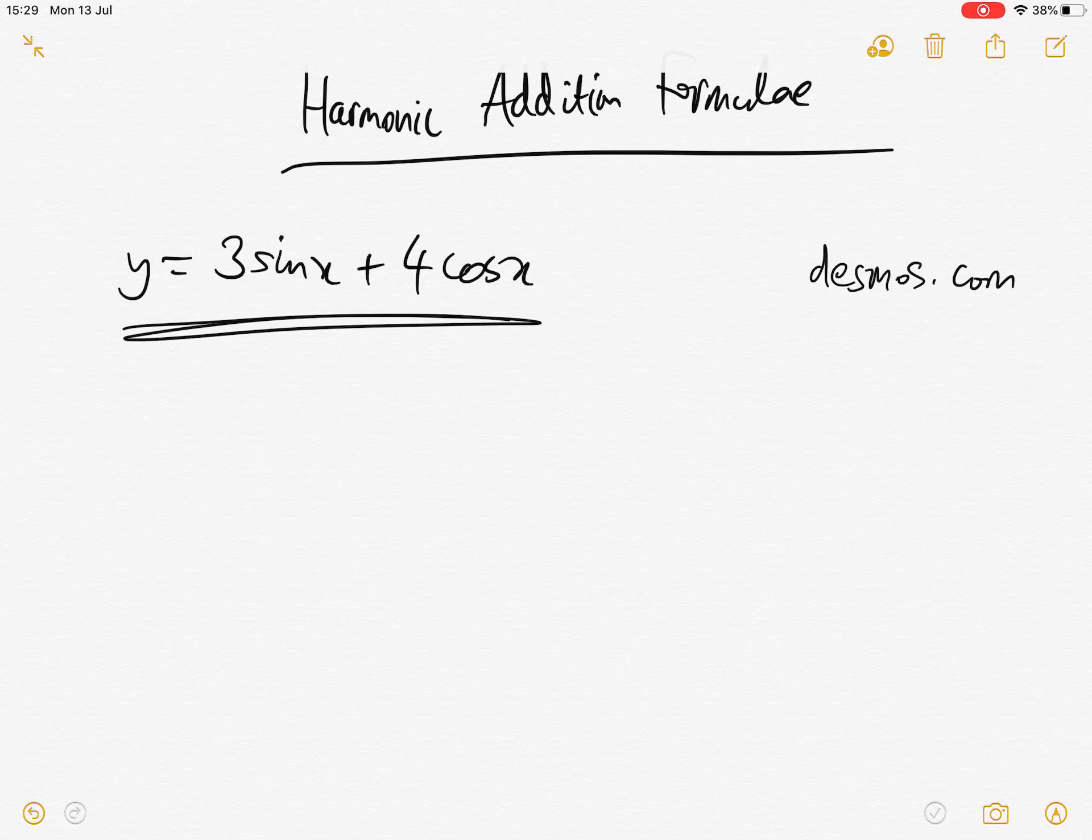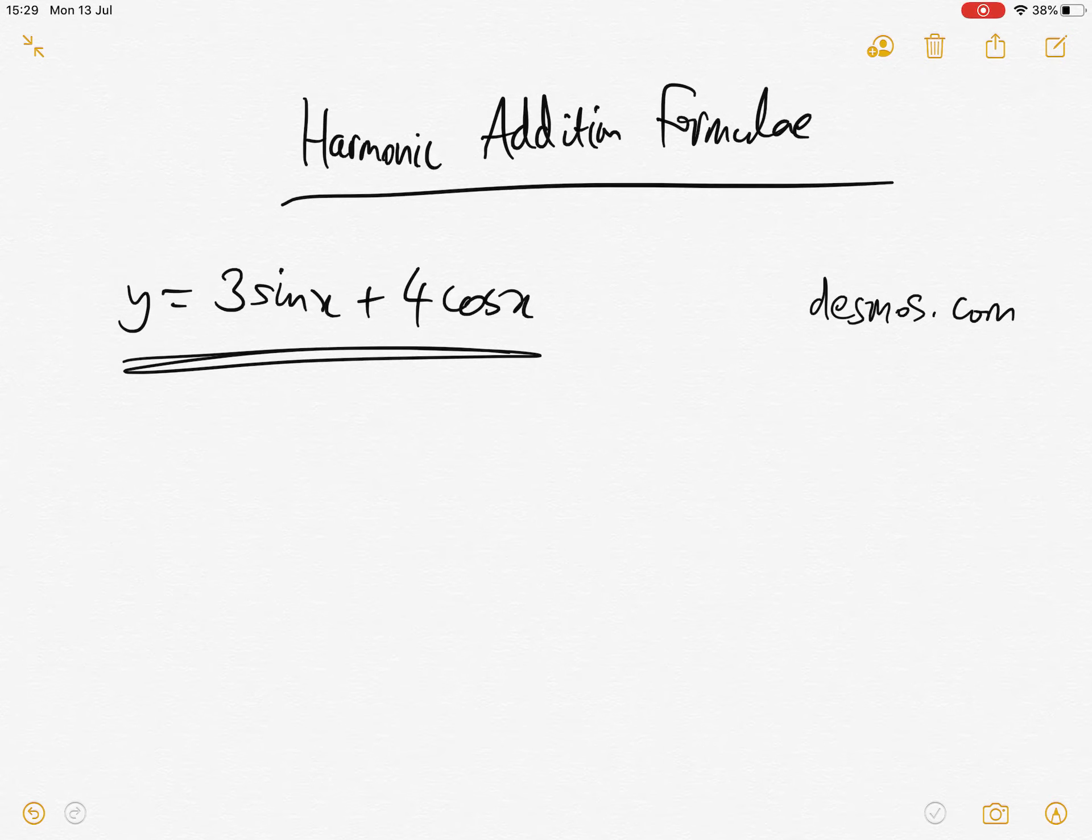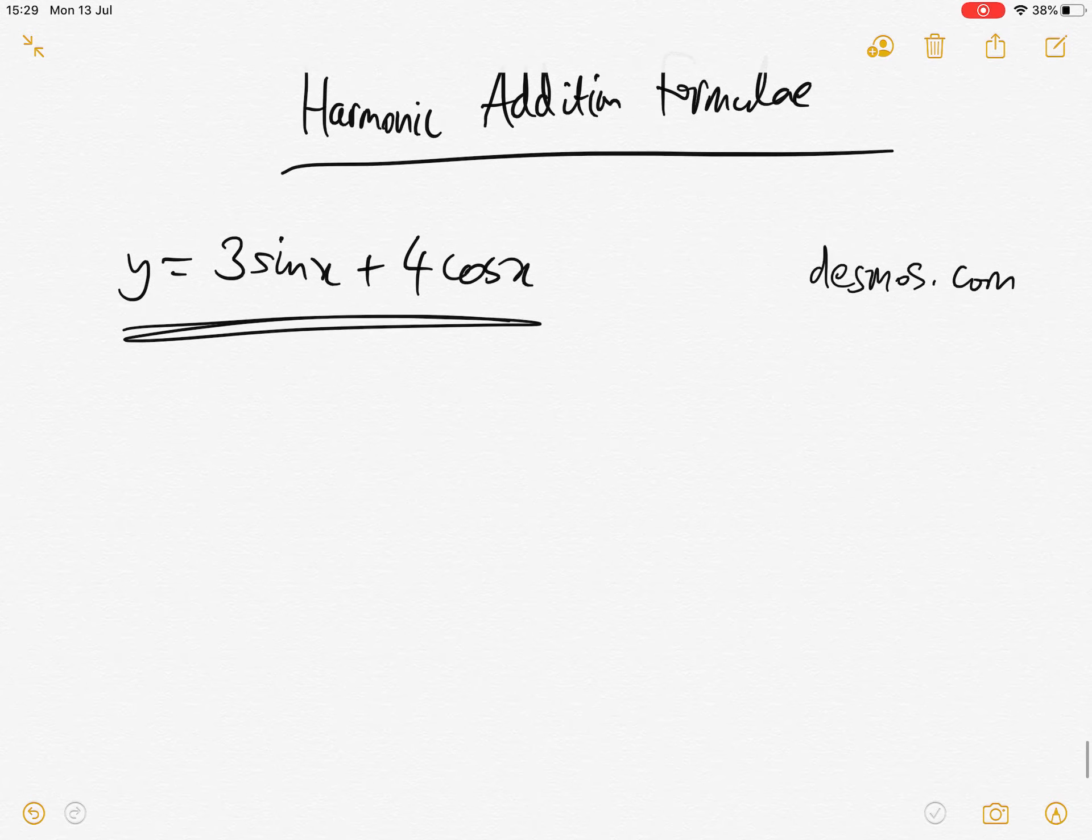Hopefully your answer is that it reminds you of a single trig function. It looks like the graph transformation of a single trig function. Maybe something like sine x plus some number, which I'll just call alpha, and maybe times r as well, where r is just some number. So maybe it looks like it's something of this form, where r and alpha are just constants. And indeed we're going to show it is of this form.